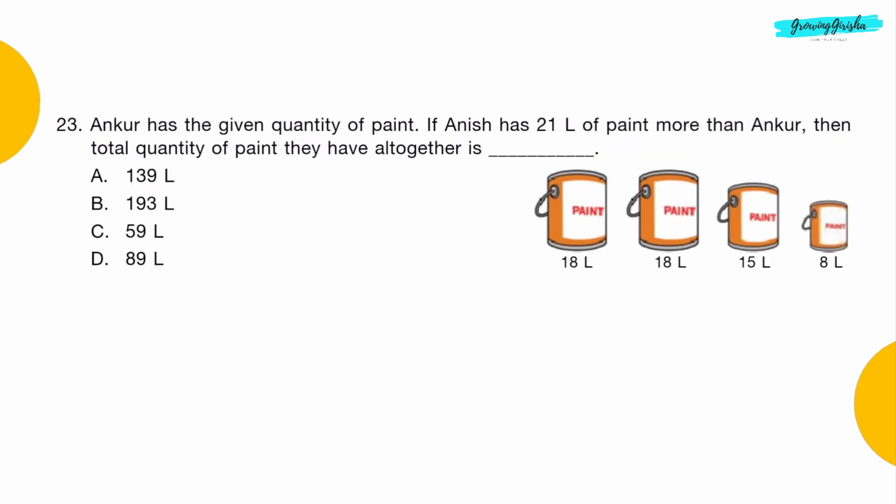Question 23: Ankur has the given quantity of paint. If Aniche has 21 liters of paint more than Ankur, then total quantity of paint they have altogether is dash. Option A: 139 liters.